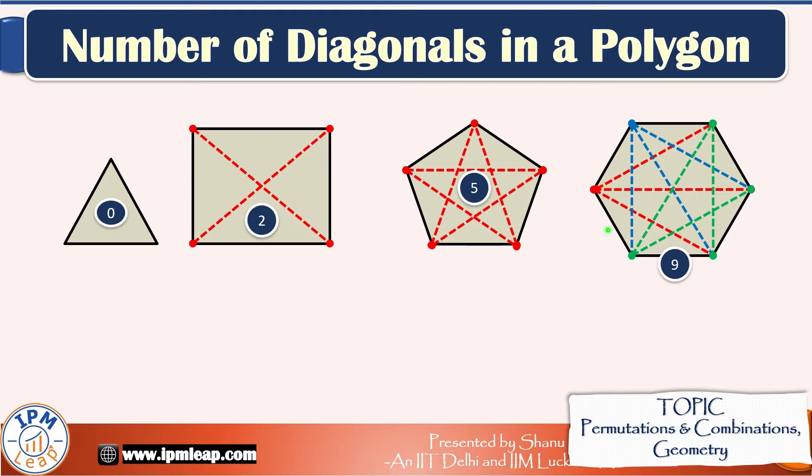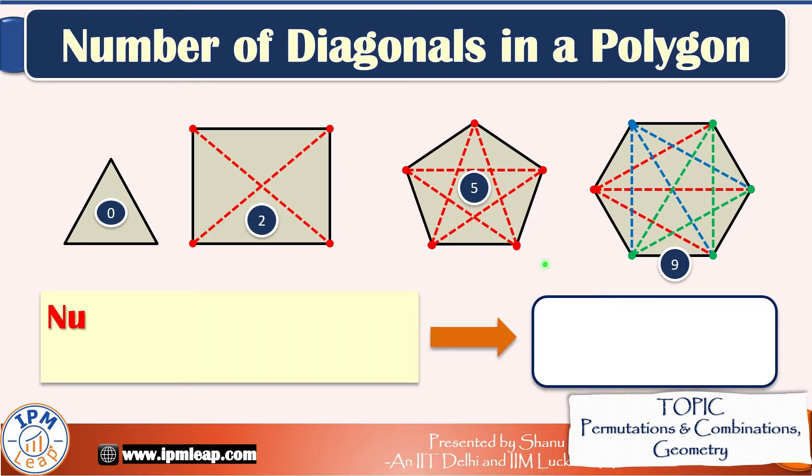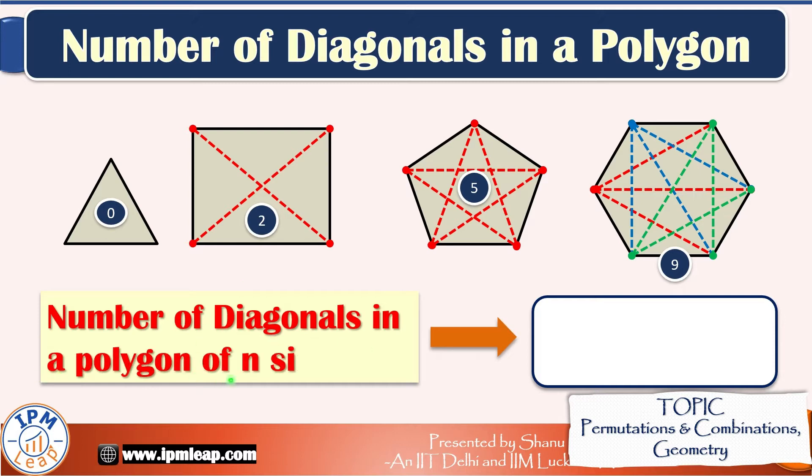Counting the number of diagonals in a polygon is a popular question asked in all entrance exams. This question is a cakewalk if you know the formula for the number of diagonals. The number of diagonals in a polygon of n sides is equal to n into n minus 3 divided by 2.